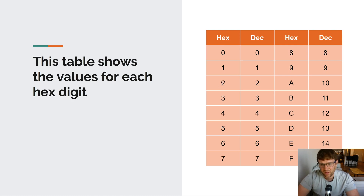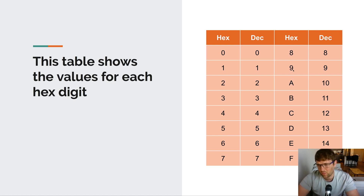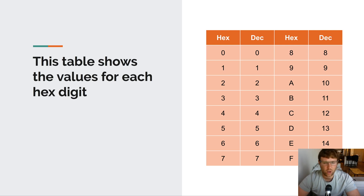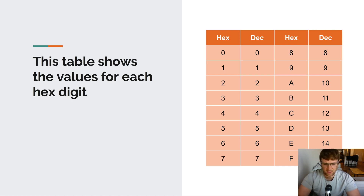This table shows the different values for each hexadecimal digit. Hex 0 through 9 looks exactly the same as decimal. When we get past 9 we have the symbols A, B, C, D, E, and F, which correspond to decimal 10, 11, 12, 13, 14, and 15. Hex comes up more often than octal, so this little chart is worth keeping in the back of your mind whenever you run into a situation with hexadecimal.